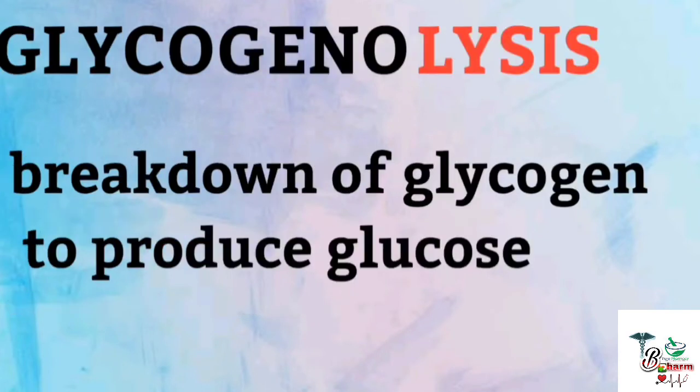Glycogenolysis — 'lysis' means breakdown. So the breakdown of glycogen to produce glucose is called glycogenolysis. This is glucose release from glycogen storage. When we need glucose, glycogen breaks down.